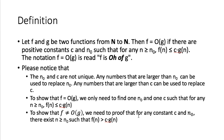This goes back to chapter one logic — you need to understand how to disprove a statement. So f is not O of g means: no matter what constant c and what n₀ you choose, you can always find some n greater than n₀ such that f(n) is greater than c times g(n).